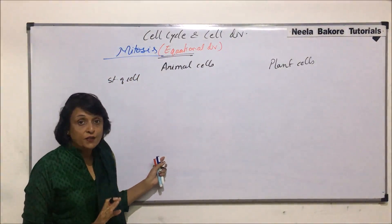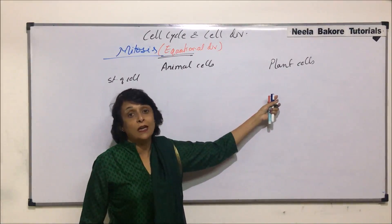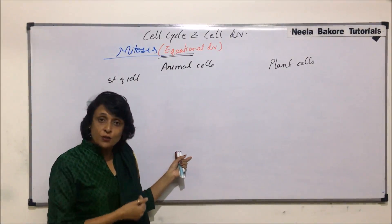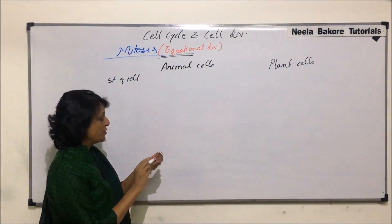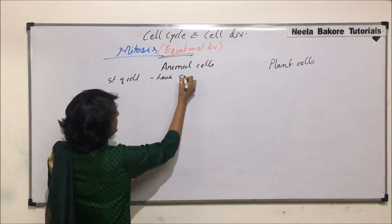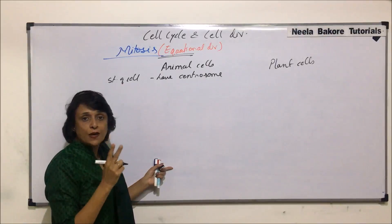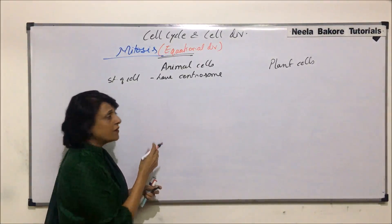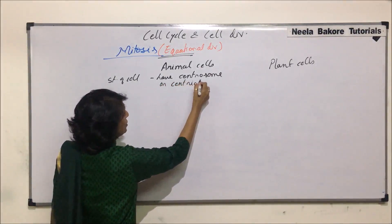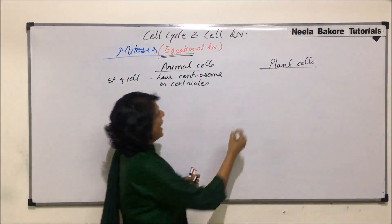The most important structural difference is that animal cells have centrioles, while plant cells do not. Animal cells have a centrosome — two centrioles surrounded by pericentriolar fibers — whereas in plant cells, the centrosome or centrioles are absent.